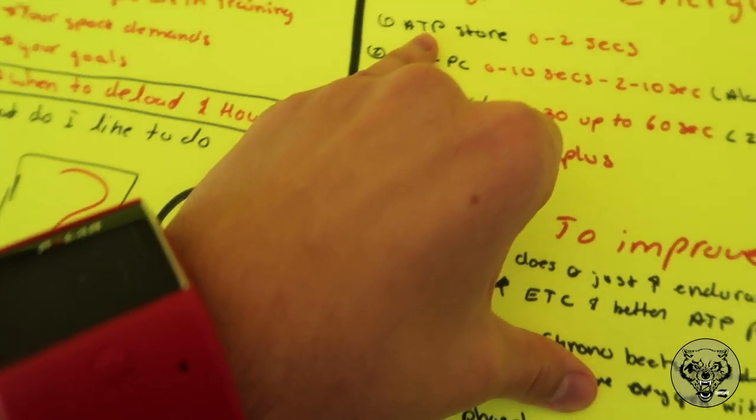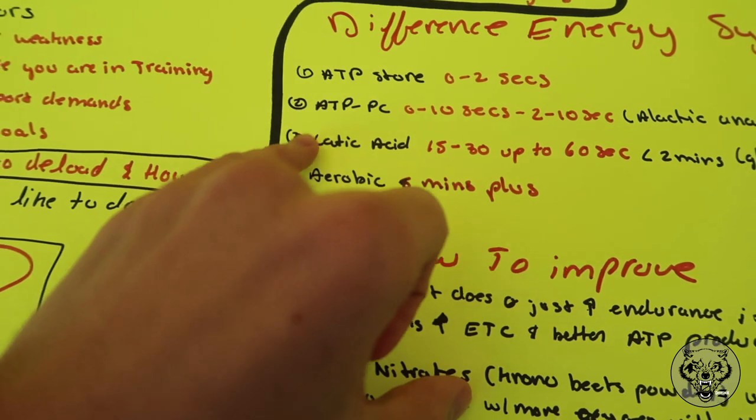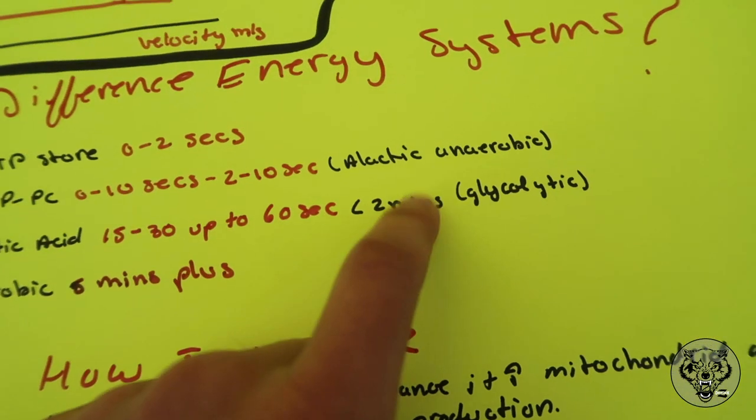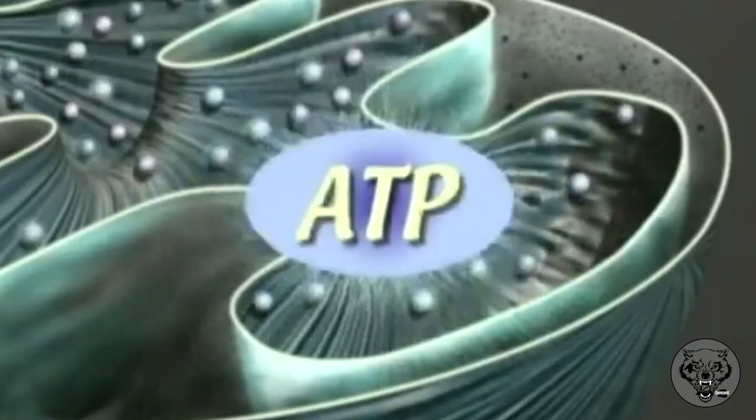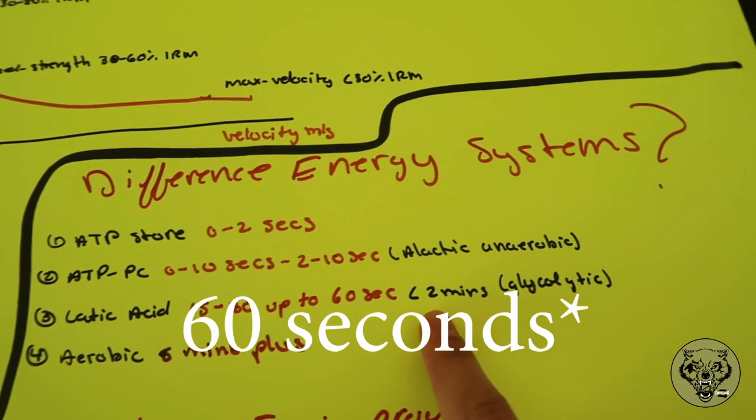The first one is the ATP-PC system, which is your phosphocreatine system. Your ATP stores last roughly 0.02 seconds, and your ATP-PC system can go up to 10 seconds. This is mostly called your alactic anaerobic system — you're not building any lactic acid. It's the energy already stored in your mitochondria and cells. My teacher used to say it's the energy you use to sprint away from a tiger — that 10-second burst. It depletes pretty quickly.